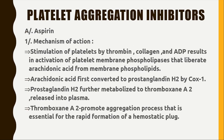The platelet aggregation inhibitor known as aspirin works by the following mechanism: stimulation of platelets by thrombin, collagen, and ADP causes activation of platelet membrane phospholipids, releasing arachidonic acid. Arachidonic acid is then converted to prostaglandin H2 by COX-1, and prostaglandin H2 is further metabolized to thromboxane A2, which is released into plasma. Thromboxane A2 promotes the aggregation process essential for rapid formation of a hemostatic plug.